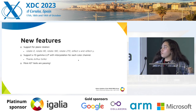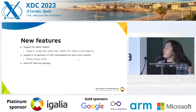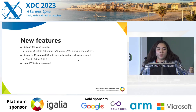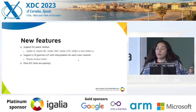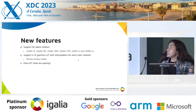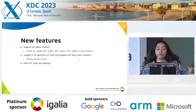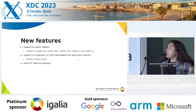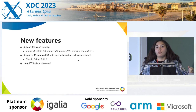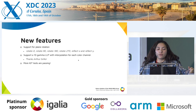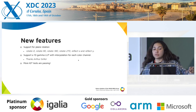We also had new features such as plane rotation — it was one of the first plane features supported, and now we support all rotations and reflections in our planes. We also added support for 1D gamma LUT with interpolation for each color channel. Thanks Arthur for working on that. And we have more IGT tests passing as a result of these features.